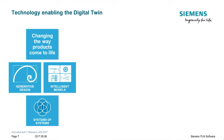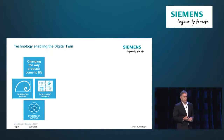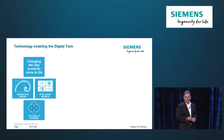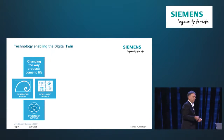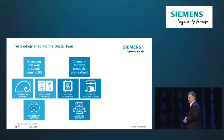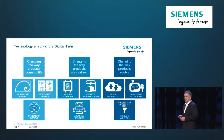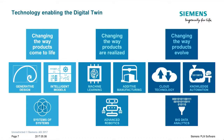There are a number of enabling technologies changing the way you think about the digital twin. In the area where products come to life: generative design, intelligent models, smart products, software, mechanical, electronics all coming together — and the systems of systems approach. Then how products are realized: additive manufacturing, advanced robotics, machine learning. And finally, the way products evolve — what's happening with the product in the field, and how does that influence your R&D process? These are all enabling technologies that really change the way you think about coming to market.